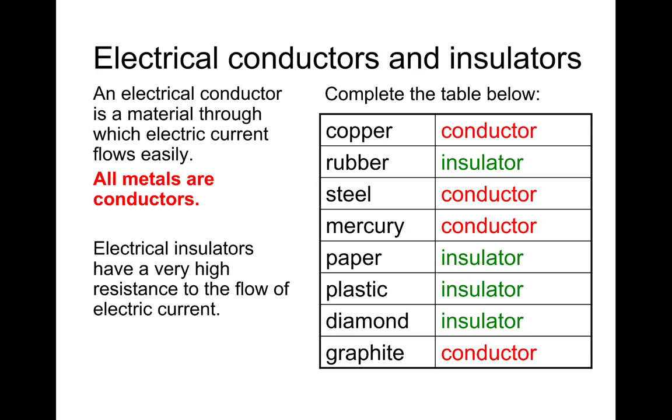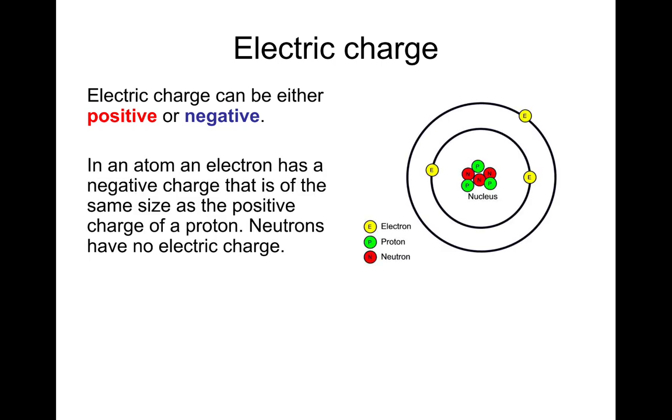Hopefully that went okay, let's move on. Electrical charge. Electric charge can be either positive or negative. So a bit of a recap of this, and you also do this in chemistry. In an atom, an electron has a negative charge that is the same size as the positive charge of a proton. Neutrons have no electric charge, it's zero.